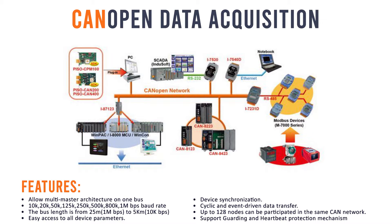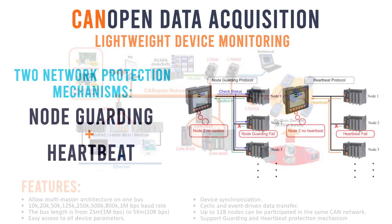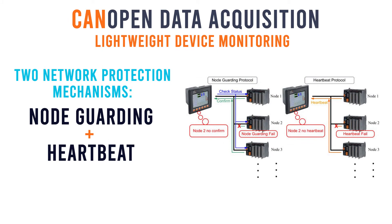The application layer as well as the CAN-based profiles are implemented in software. CANOpen provides two network protection mechanisms: node guarding and heartbeat. For node guarding, the master will send a request to check the slave status. If some slave does not confirm this request, the master will indicate them with node guarding fail. For heartbeat, the slaves will send heartbeat messages to the master to let the master know they are alive. If the master does not detect someone's heartbeat, then the master will indicate it with heartbeat fail.